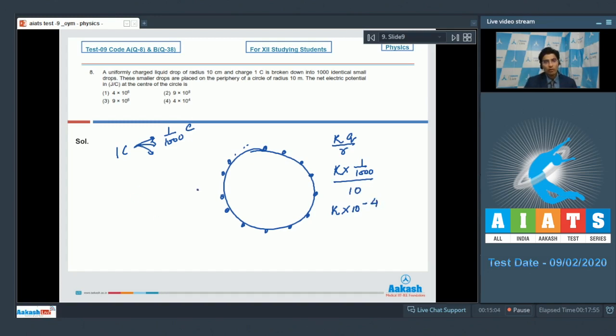For 1000 drops, we have to multiply this individual potential by 1000 and this will be equal to the net potential. So this will be equal to K into 10 to the power minus 1, or 9 into 10 to the power 8. It means that option number 2 for this question is the correct answer.